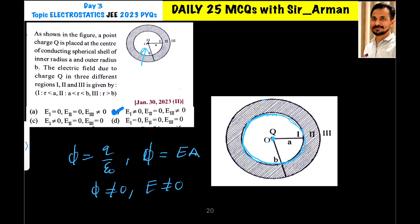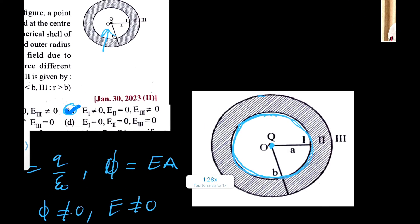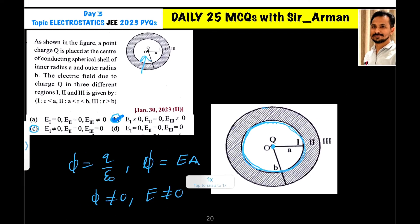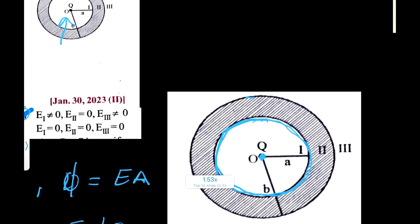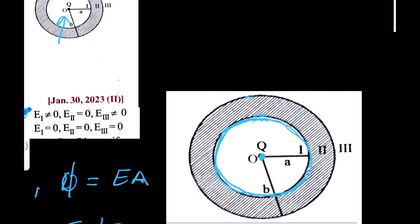So for Region 1, the electric field is not zero, which leaves us with options B and C. Now for Region 2, which is inside the conducting shell — this is a conducting spherical shell, and this region is the interior of the metal itself.